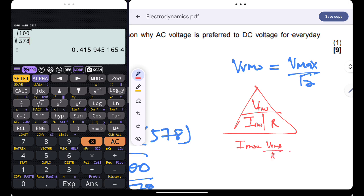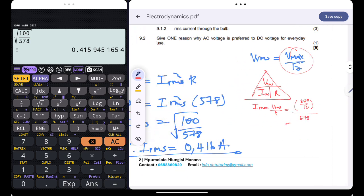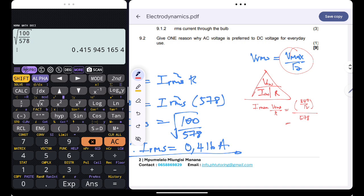I_rms is just equal to V_rms all over the resistance. You could have just said the V_rms is equal to V_max divided by the square root of 2, that's 340 divided by the square root of 2, all over the resistance which is just 578. This would have given us the same answer.